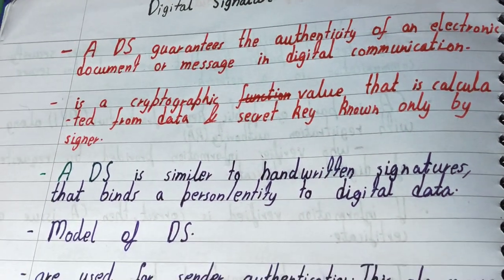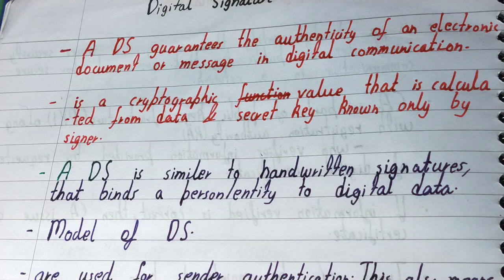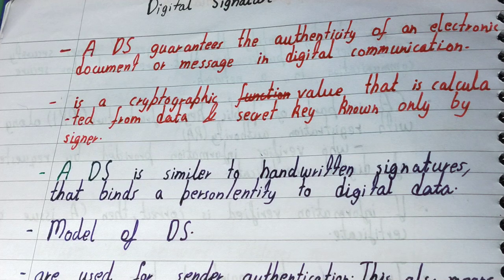A digital signature is similar to a handwritten signature — it binds an individual to digital data, confirming that a particular individual is the one sending that digital data. Behind this, the digital signature contains a secret key known only to the sender, saved in a device. When the sender wants to authenticate a document sent over the internet, only they will have that secret key to sign the document.